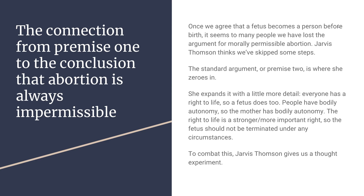She expands the second premise to give it more detail: killing an innocent person is always wrong because everybody has a right to life. So if a fetus is a person, the fetus has a right to life as well. People have bodily autonomy, which means they have control over what happens to, around, and in their body. So the mother has this too. Yet the right to life is a stronger or more important right than bodily autonomy, so the fetus should not be terminated under any circumstances. Remember, this is the expanded premise two of the argument against abortion.